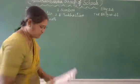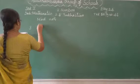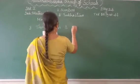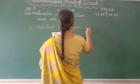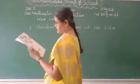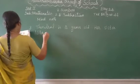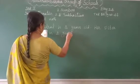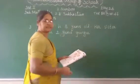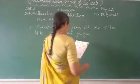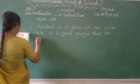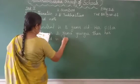Third word problem. Enver is eight years old and her sister Mira is two years younger than her. How old is Mira?